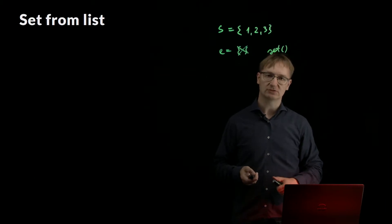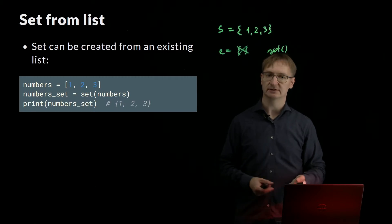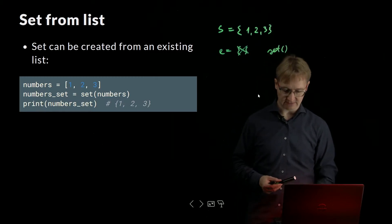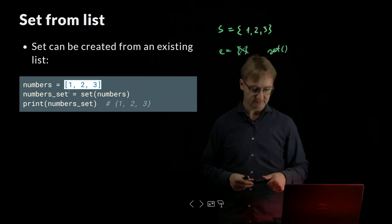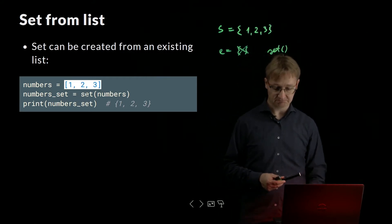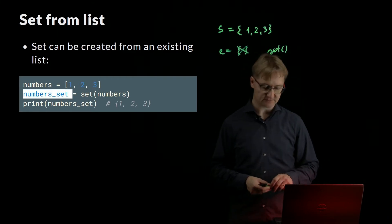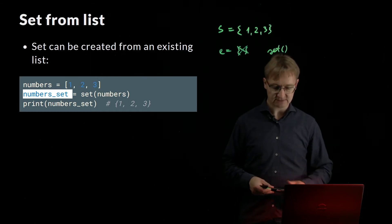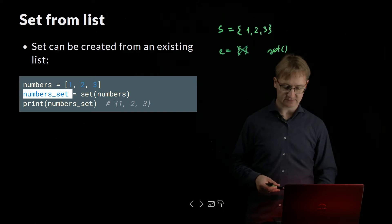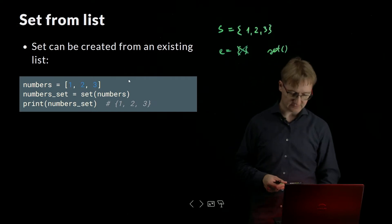I can also turn a list into a SET. There is a list of elements — you can see the regular brackets. Now I turn it into a SET, and there will be a new variable called number_set. The SET is created from those elements inside the list, and this number_set contains three elements after the second line.